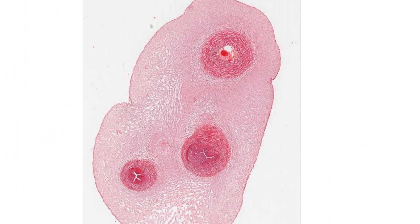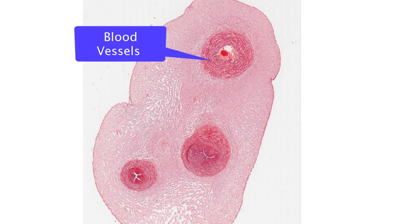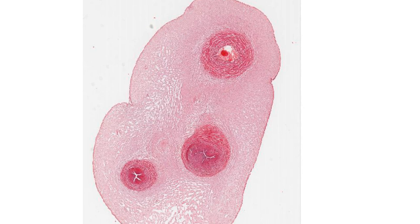The final type of connective tissue is embryonic connective tissue, especially mucus connective tissue, which is present in the umbilical cord. Wharton's jelly is a gelatinous substance that contains collagen fibers and cells. Blood vessels in the umbilical cord are protected by this jelly.